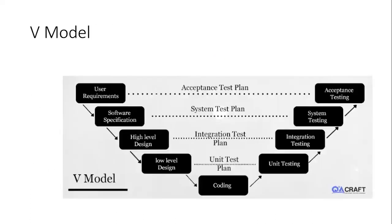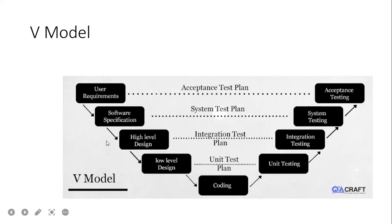The next model is the V-model. Looking at the V-shaped diagram, these same phases are there, but here the phases occur parallelly with each other. The first is the requirement gathering phase, similar in function to the waterfall model. Then there is software specification — which software is designed — followed by high-level design, where the architecture is provided.